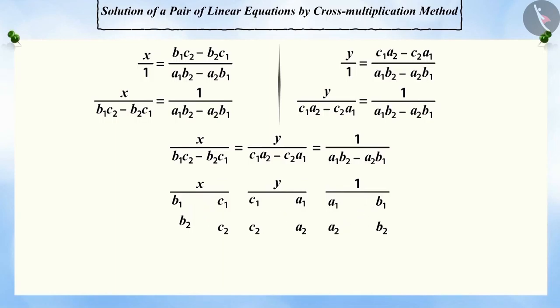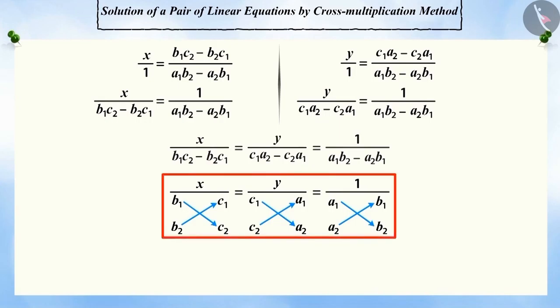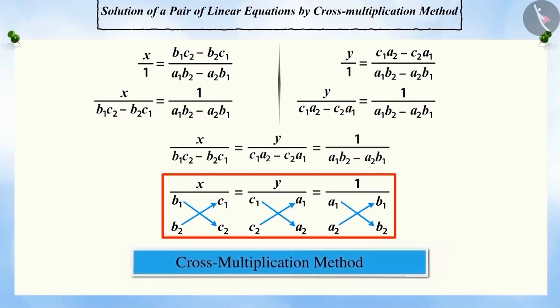This conclusion could be remembered by this method also. The arrows between the two numbers tell us that after multiplying them, we subtract the second product from the first. As this method involves cross-multiplication of numbers, it is called solving the equations by cross-multiplication method.